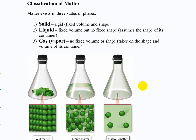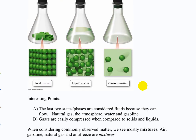A few more definitions to make sure we're all on the same page. You've probably heard of solids, liquids, and gases. A solid has a fixed volume and shape. A liquid has a fixed volume but no fixed shape — it takes the shape of its container. A gas has no fixed volume or shape — it takes on both the shape and volume of its container. You put liquid in a glass and it conforms to the shape but keeps its volume; gas in a flask expands to fill the entire flask.